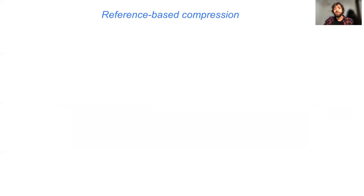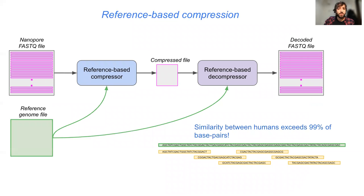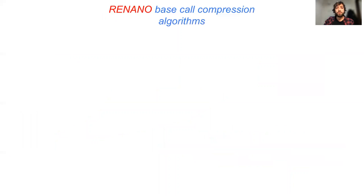One way of compressing base call sequences effectively is through what we call reference-based compression. In these methods, an external reference genome is used to aid compression by exploiting the similarities across the sequenced and the reference genome, which, for example, in the case of humans exceeds 99% of the base pairs.